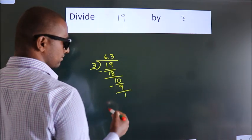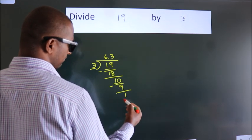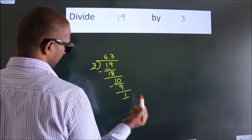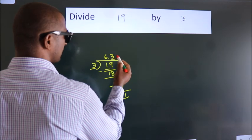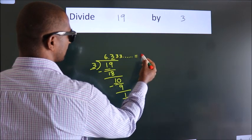Now you observe, we had 1 here, and we got 1 again. That means this number keep on repeating. So this is our quotient.